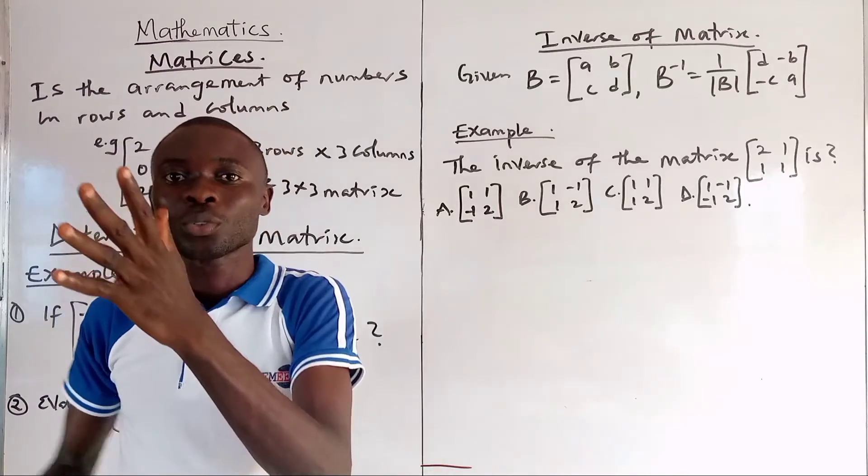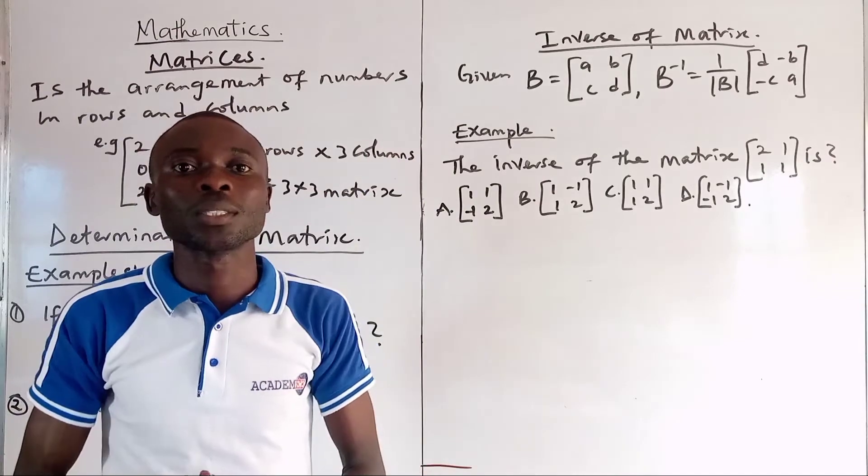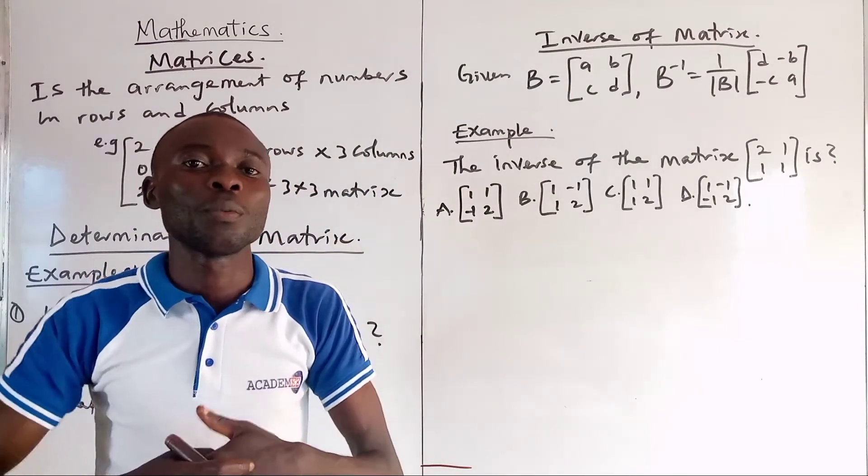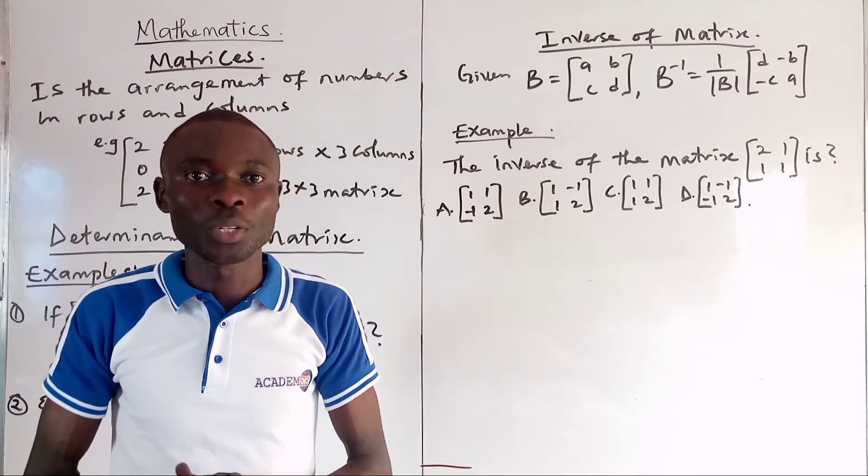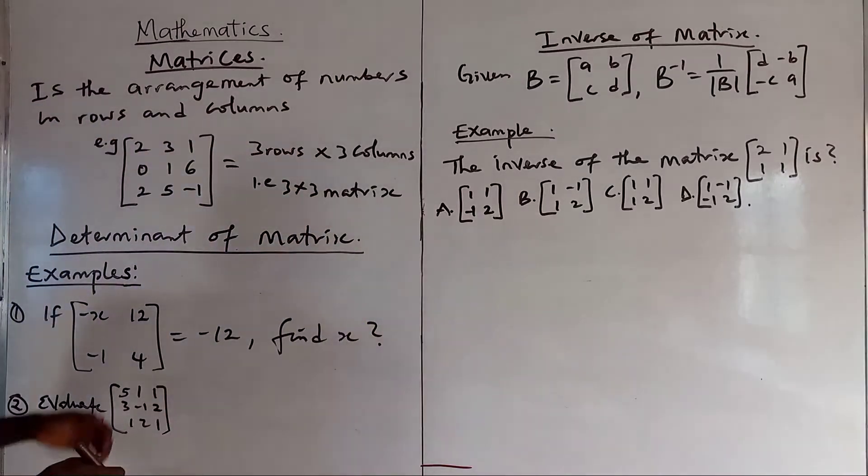For instance, if you have 4 rows and 3 columns, that means it is 4 by 3 matrices. And if you have 2 rows and 2 columns, that means it is 2 by 2 matrices. Whenever the number of rows and columns are equal, that means you have a square matrices. Here is the explanation we can find on the board.